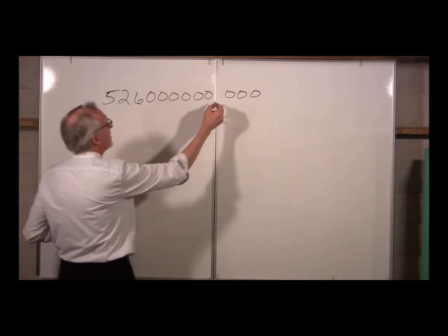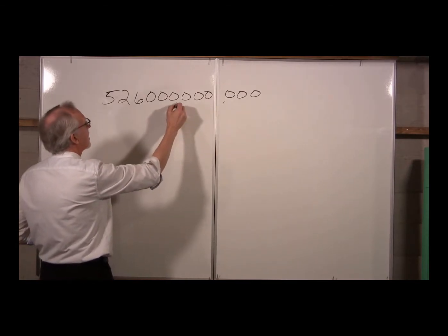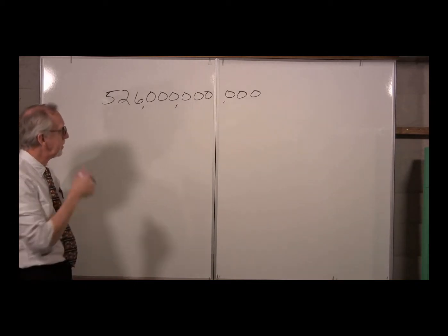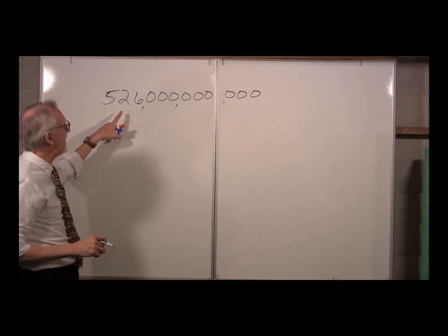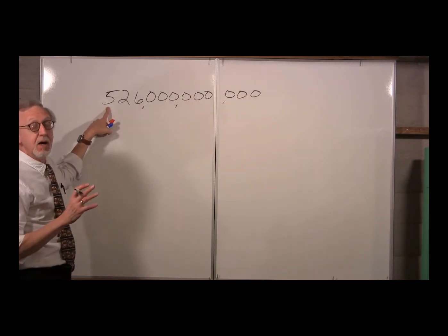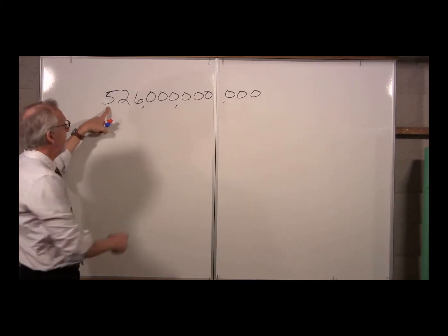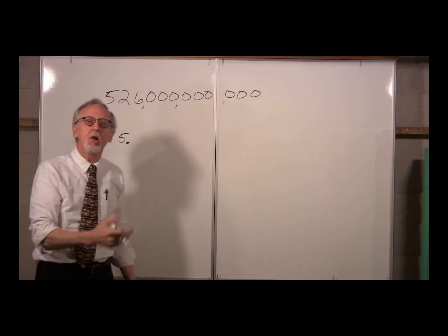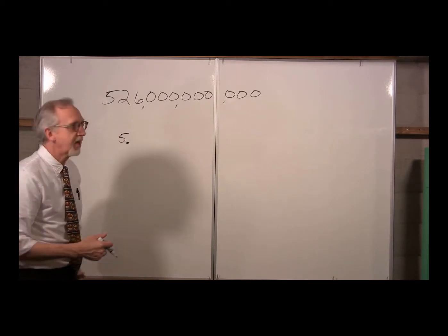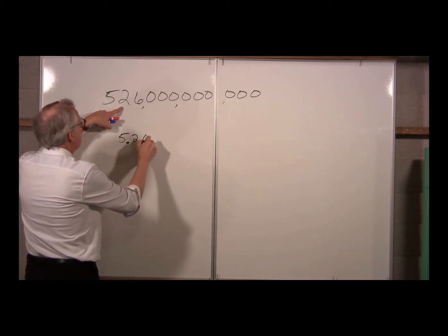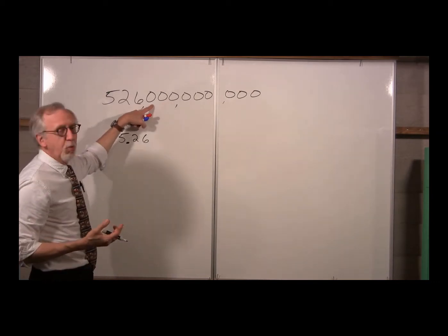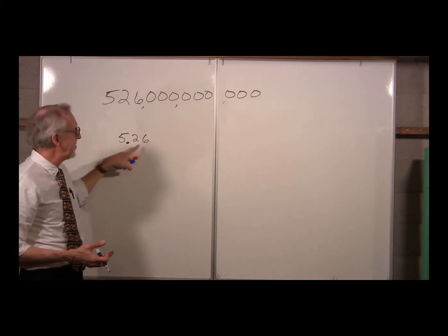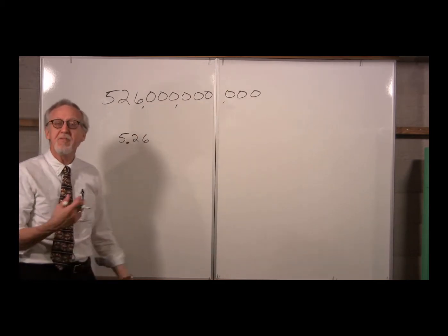This quantity would be 526 billion. The way to write this in scientific notation is you write the first significant digit on the left followed by a decimal point, then write down all of the other significant digits after the decimal point. So in this case, 5.26 - and if we wanted 4 significant figures we could write an extra zero, or two extra zeros for 5 sig figs.